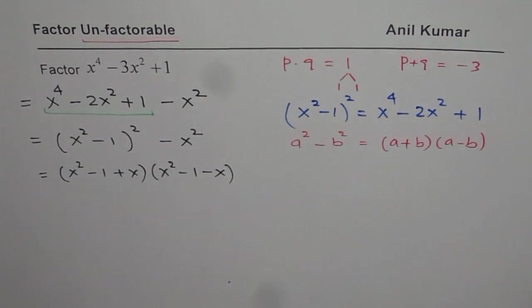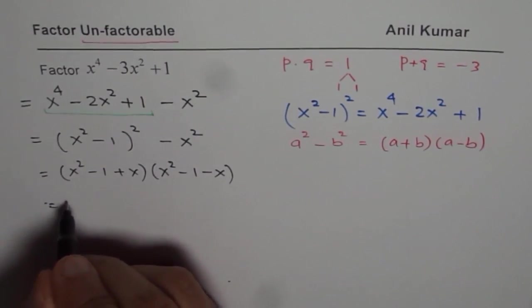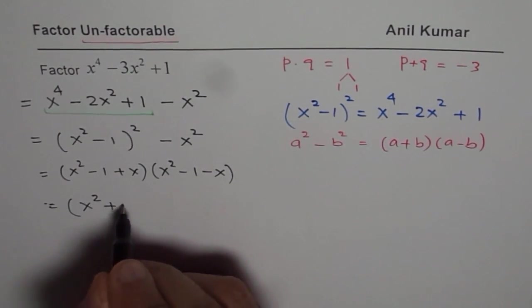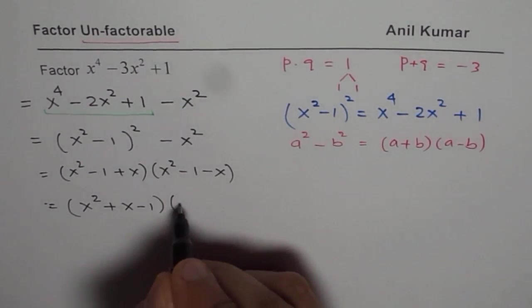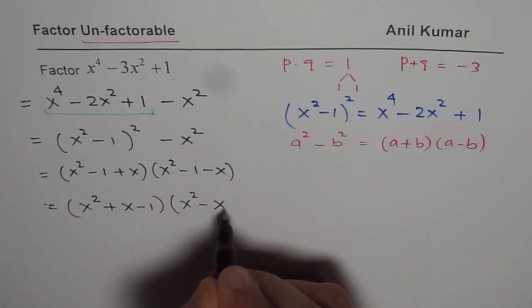We have factored the unfactorable. Let me rearrange and write this as (x^2 + x - 1)(x^2 - x - 1).